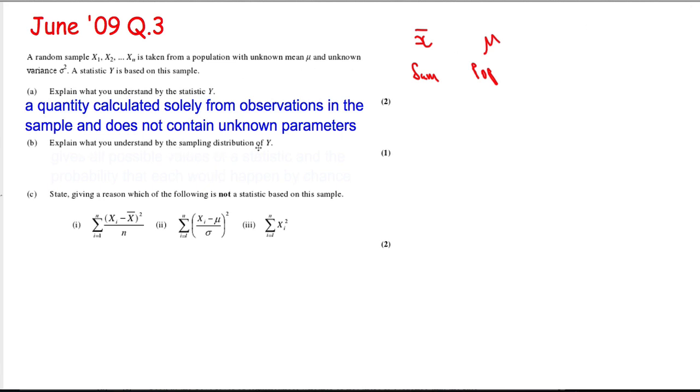Explain what you understand by the sampling distribution of y. Well, the sampling distribution of a statistic gives all possible values of a statistic and the probability that each will happen by chance, which is essentially what we've just done. In the previous question, we listed all the different values that we could get when we chose three coins, and then we also worked out the probability for the mean value.